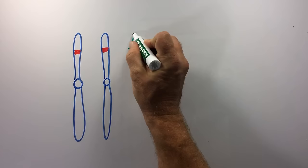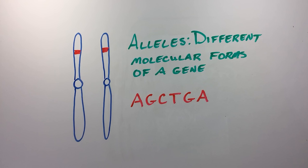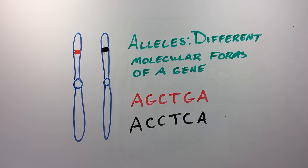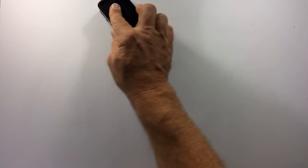A gene in a particular locus can have different molecular forms that contain different genetic information. These different forms are called alleles. For example, one allele for our hypothetical gene may have the sequence of bases in the DNA of AGCTGA. If a mutation causes this sequence to change to ACCTCA, this would represent a different allele.